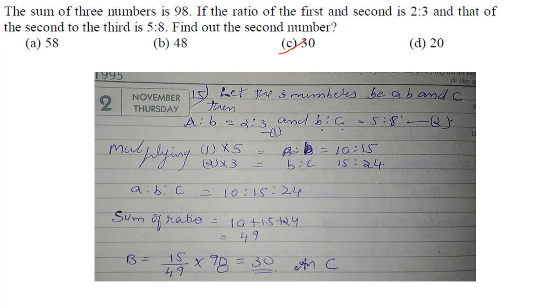The sum of three numbers is 98. If the ratio of first to second is 2:3 and second to third is 5:8, find the second number. a:b = 2:3, b:c = 5:8. Multiply first by 5 and second by 3 to get a:b:c = 10:15:24. Sum of ratio = 49. Second number = (15/49) × 98 = 30. Answer is option C.